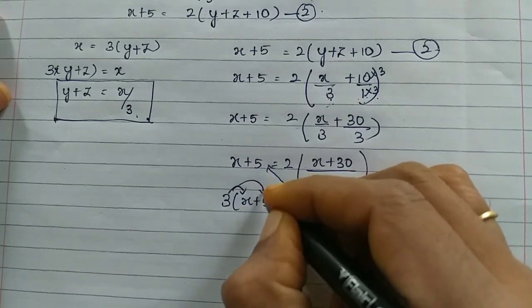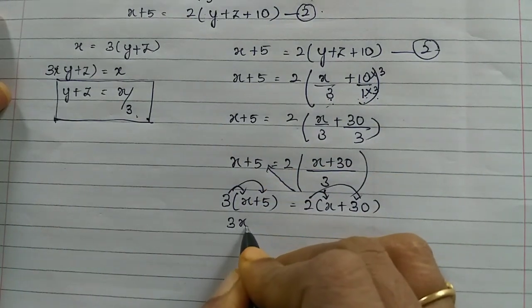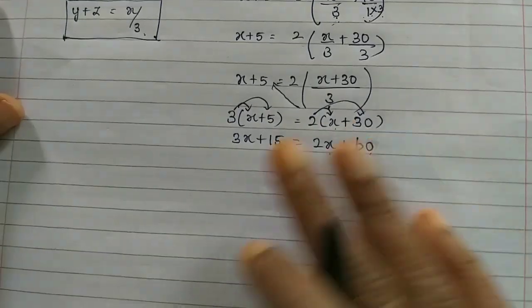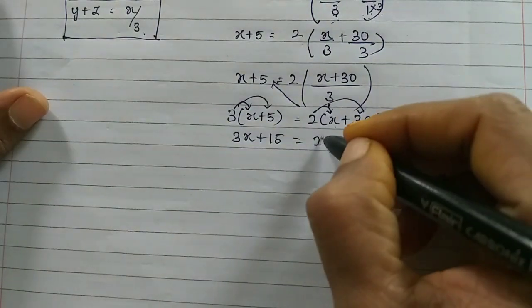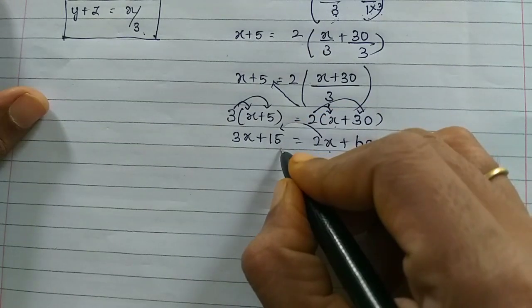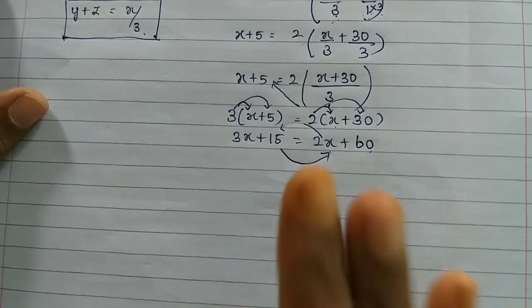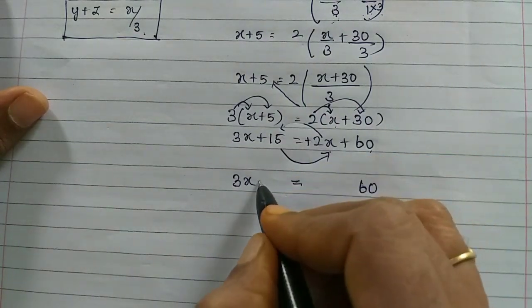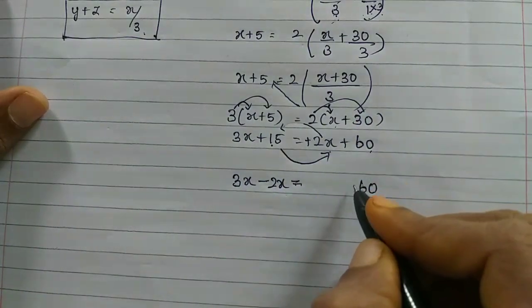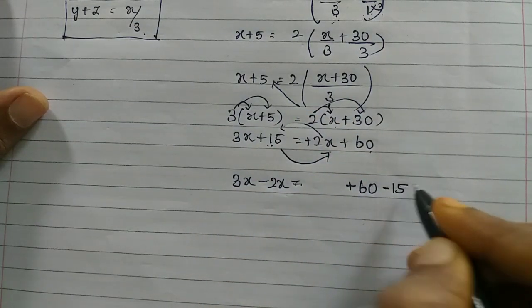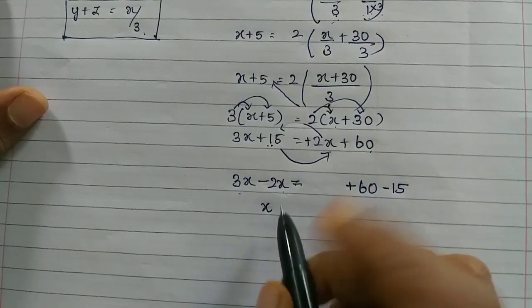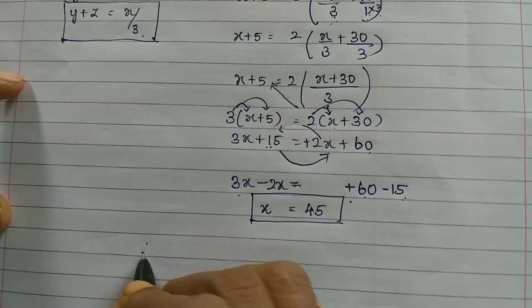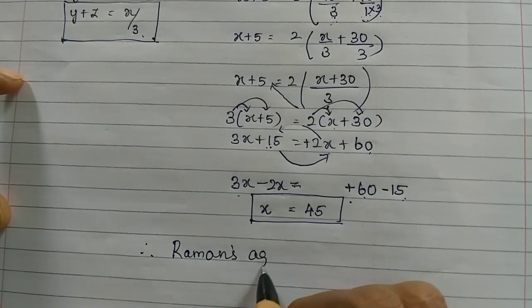Taking 3 to the opposite side as multiplication: 3 into x plus 5 is equal to 2 into x plus 13. Then 3x plus 15 is equal to 2x plus 26. So x will be on one side and constants on the other. 3x minus 2x is equal to 26 minus 15. So x is equal to 11. Wait — 16 minus 15 is 1, giving x is equal to 45. Therefore, Raman's age is 45.